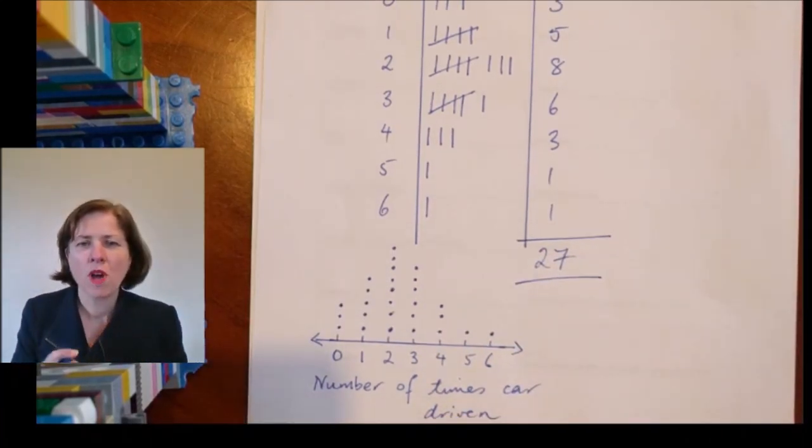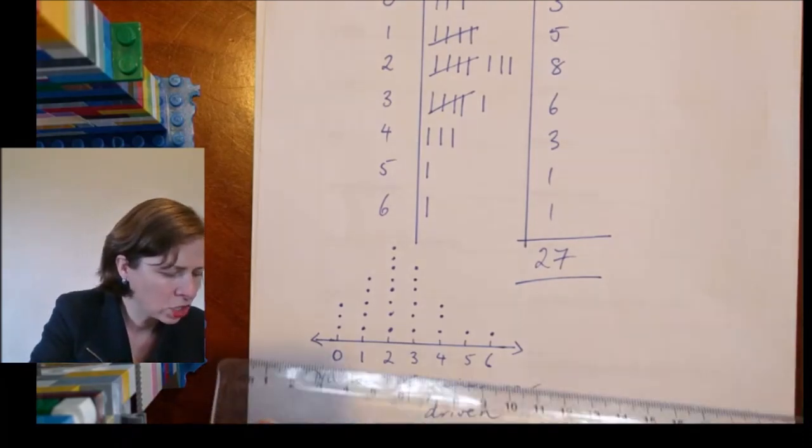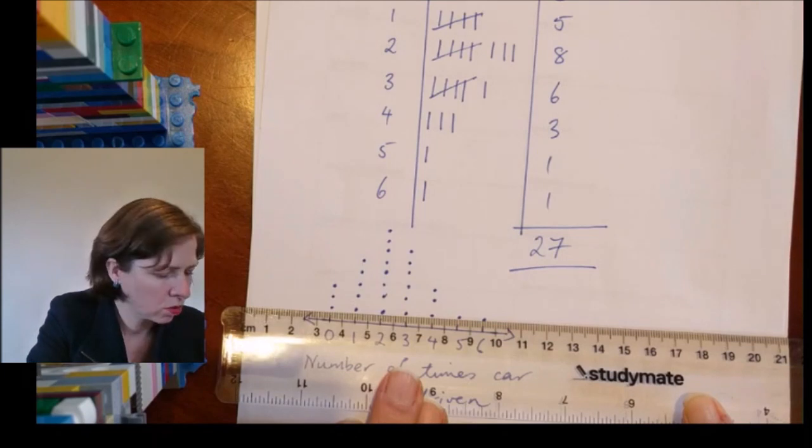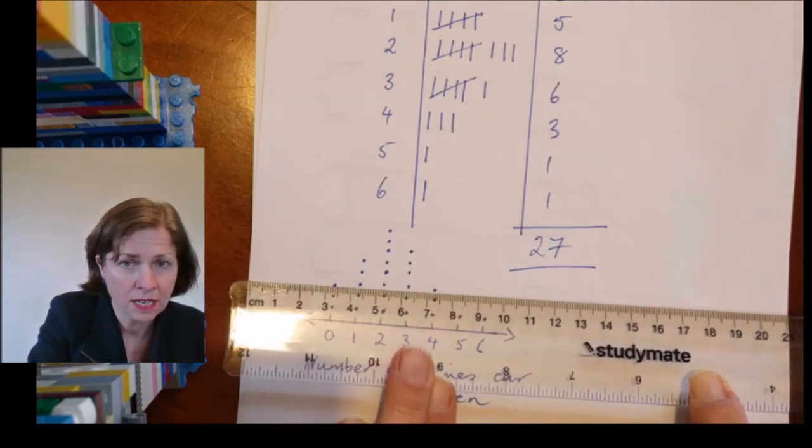Okay, so one of the things to notice is that my dots are pretty much lined up. If there's only one, all the ones line up across. All the twos more or less line up across. The threes line up, the fours, the fives, six, seven, and eight.